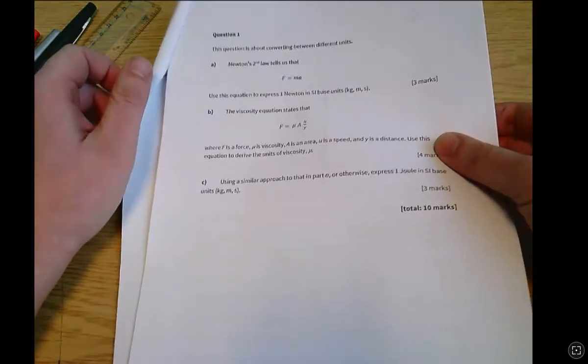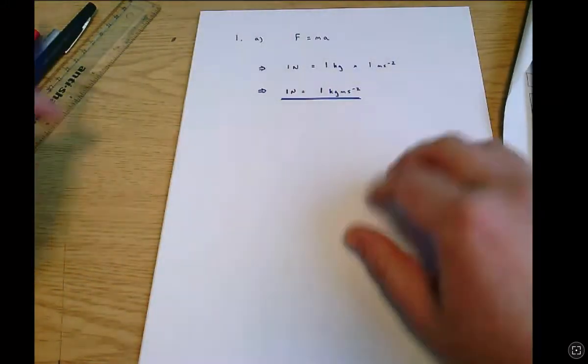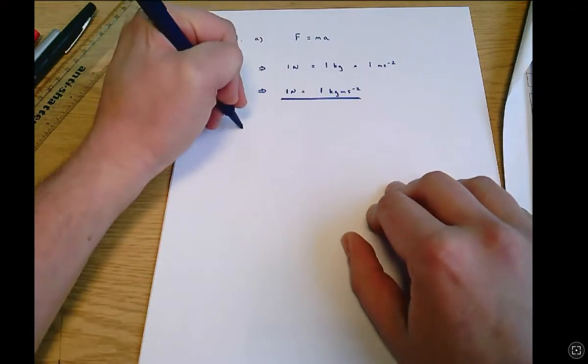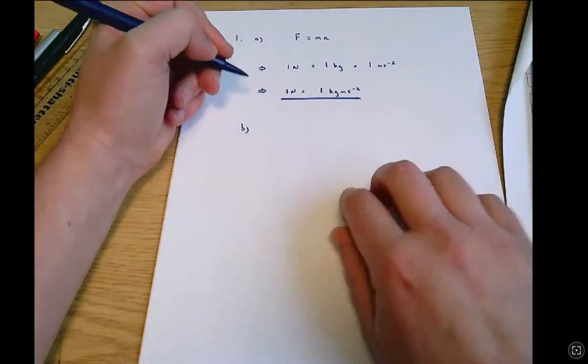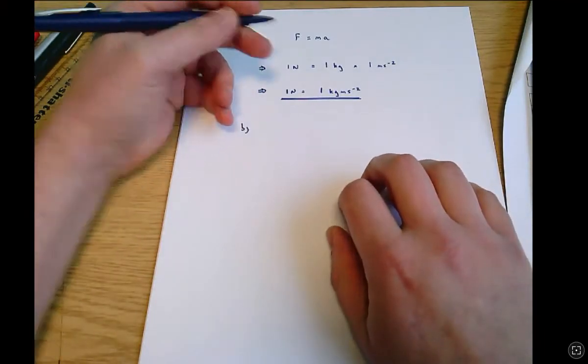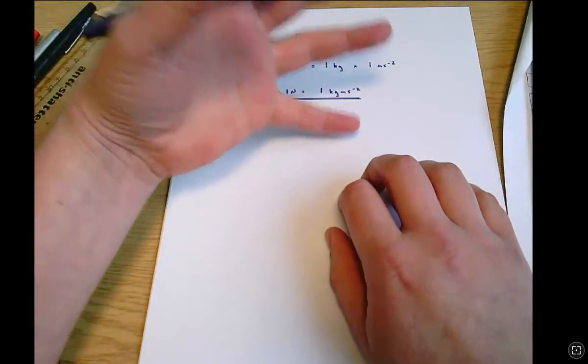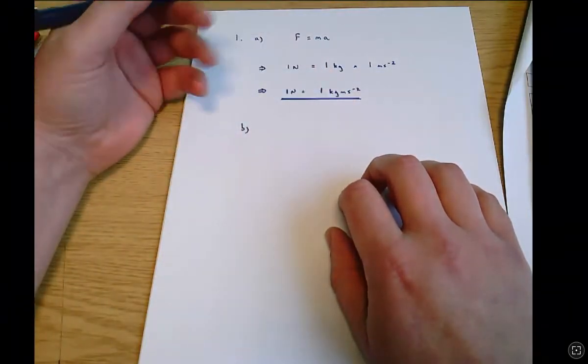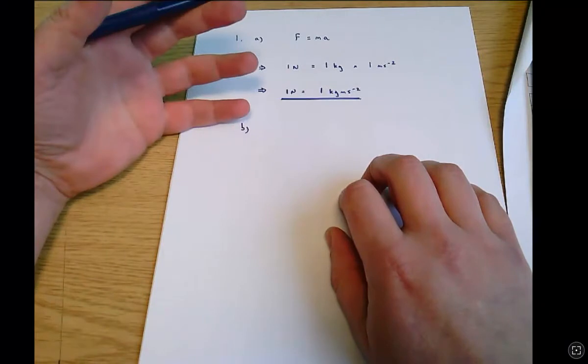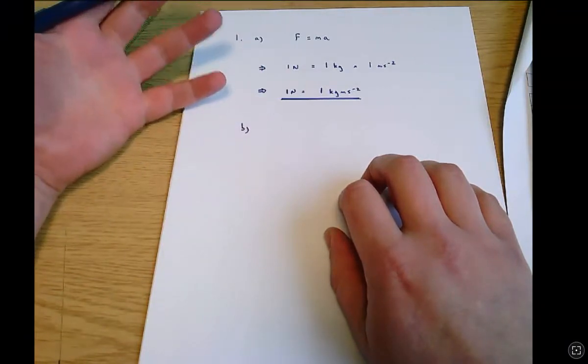So what we're going to need to do is to rearrange that equation that we're given to get it in terms of mu and if we've got mu on the left-hand side and other terms on the right-hand side we can find the combined units of the right-hand side and those must be the units of viscosity mu.